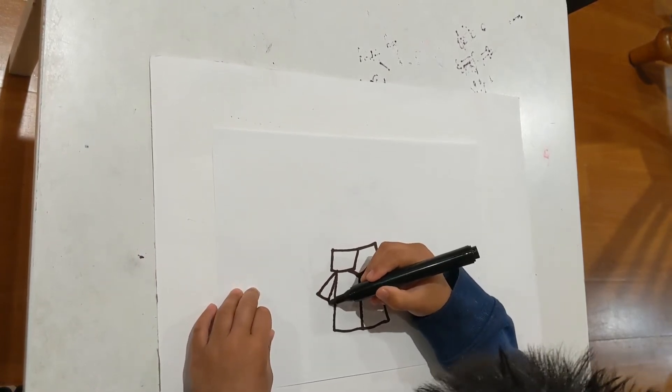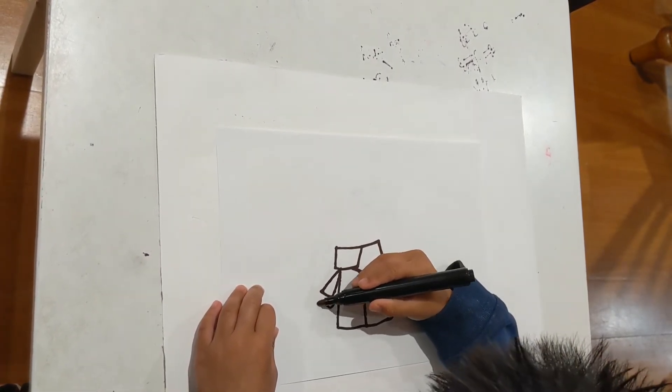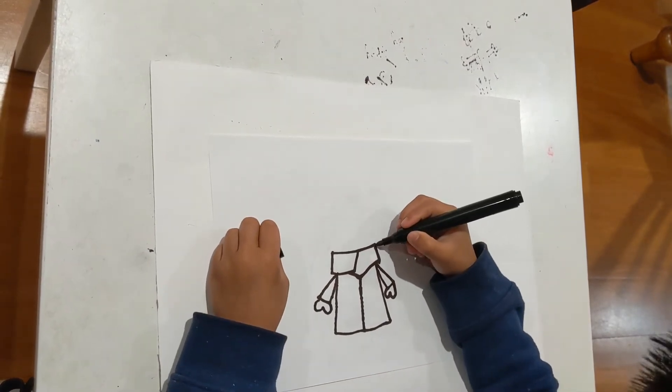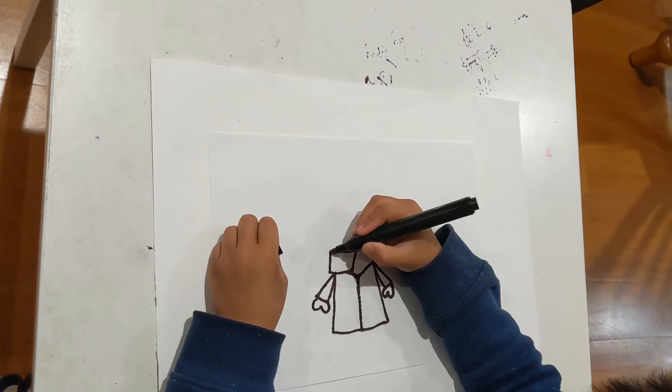And then on this side, again, U-shape to the finger and another one to the other. So we'll go up. Then we'll just move these lines a bit up.